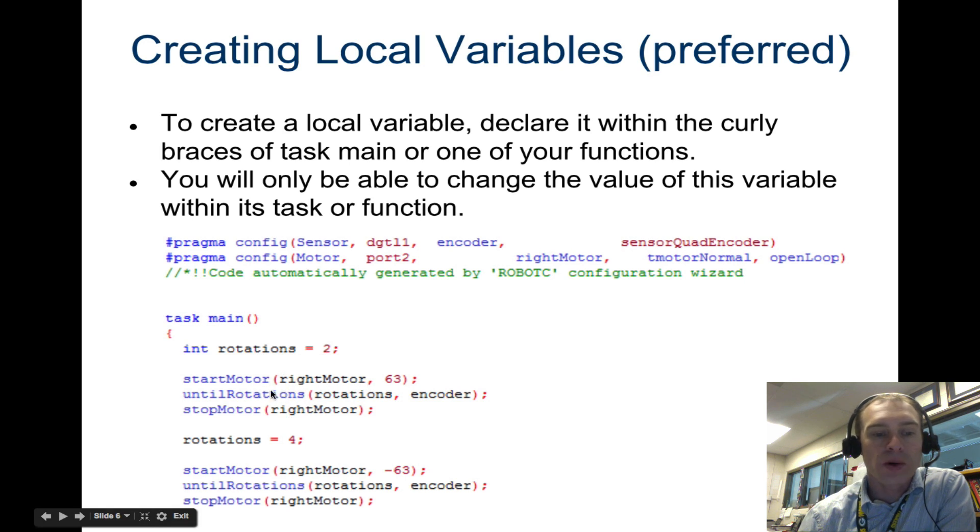And now we're going to start the motor, and we have an until here. Until rotations is your encoder. So until the number of rotations, and right here you've set it to rotations. It means you're doing it until this number. Usually we set this to a number, like one rotation, two or three, but what we've done is we've set it to the variable.